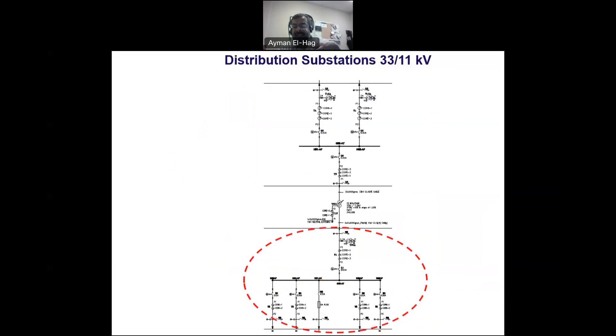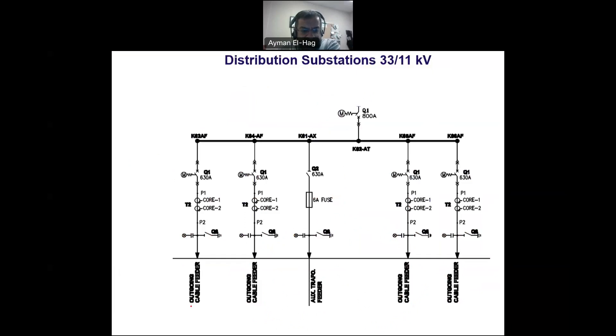Then we have the 11 kilovolt side, which is the outgoing of the substation. The incoming is 33, the outgoing is 11 kilovolt, and each feeder will go and supply a load of certain type. It could be houses, could be shops, and so on. This is an outgoing cable feeder, but here we see an auxiliary transformer. Here you can see this is the 11 kilovolt bus, and we have all these outgoings coming from them.